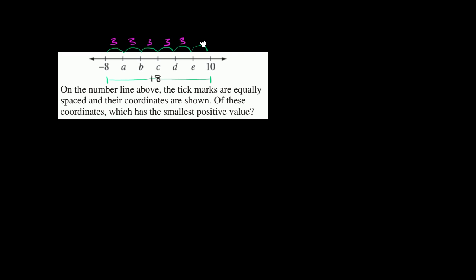So they each have a length of 3. So now we can figure out the values of A, B, C, D, and E. A gets us to negative 5. I'm just adding 3 each time. B is at negative 2. And then you add 3. You get to C, which is at 1. And we've already answered our question. This is the smallest positive value.